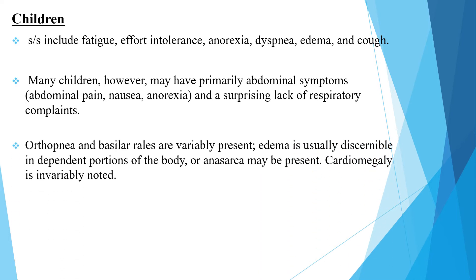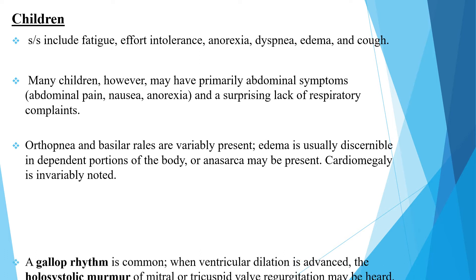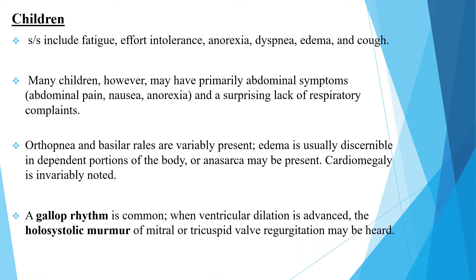Orthopnea and basilar rales are variably present, and edema is usually discernible in the dependent portions of the body; anasarca may be present and cardiomegaly is invariably noted. A gallop rhythm is common when ventricular dilation is advanced, and a holosystolic murmur of mitral or tricuspid valve regurgitation might be heard.